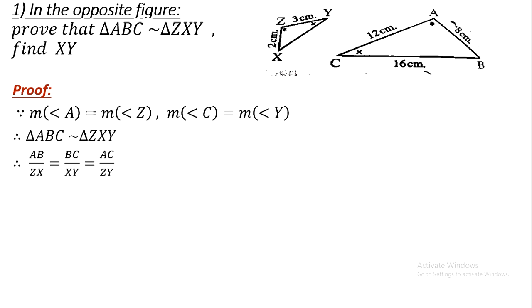Since we have proved the triangles are similar, the corresponding sides are proportional. Therefore: AB/ZX = BC/XY = AC/ZY. Substituting: 8/2 = BC/XY = 12/3.